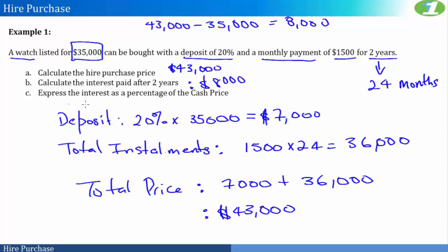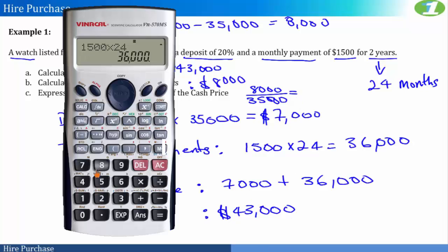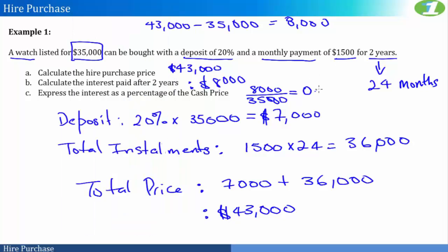And finally, we are asked to express the interest as a percentage of the cash price. Well, the cash price here is $35,000, and so $8,000 divided by $35,000 gives us 0.2286. And if I were to convert this thing to a percentage by multiplying by 100, then I'd actually get 22.86%.